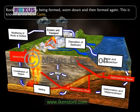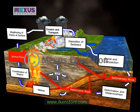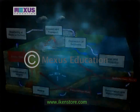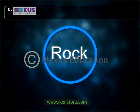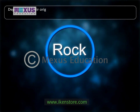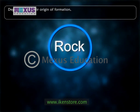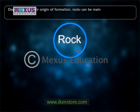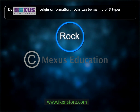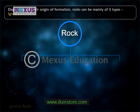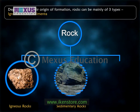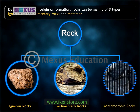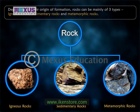Though this cycle might take thousands and millions of years, depending on their origin or formation, rocks can be mainly of three types: igneous rocks, sedimentary rocks, and metamorphic rocks.